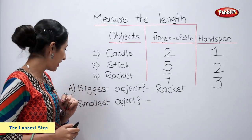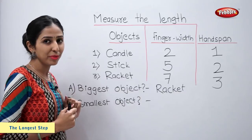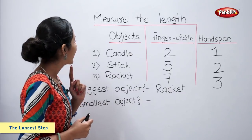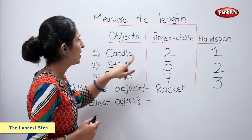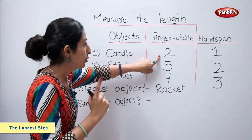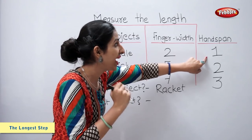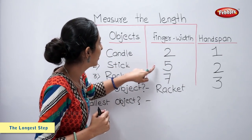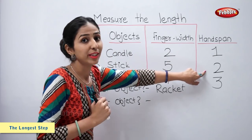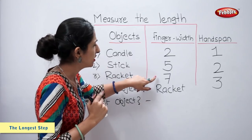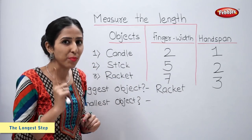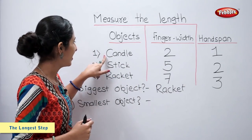Come on students, tell me which is the smallest object. Look and tell me — candle. Let us find out. Candle is two finger width, one handspan. Stick is five finger width, two handspan. Racket is seven finger width, three handspan. So the smallest object is candle.